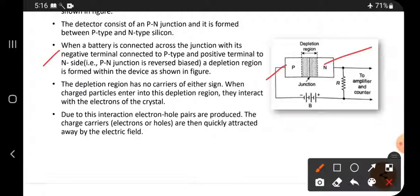When a battery is connected across the junction with its negative terminal connected to P type and positive terminal connected to N type, this means reverse bias. The battery negative terminal is connected to positive, and negative is connected to positive through R. So it is reverse biased.